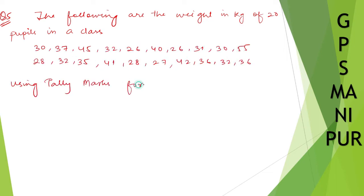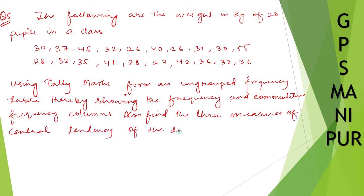Now we are doing exercise 14.1 question number 5. The following are the weight in kg of 20 pupils in a class. Using tally marks form an ungrouped frequency table thereby showing the frequency and cumulative frequency columns. Also find the three measures of central tendency of the data.